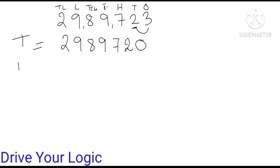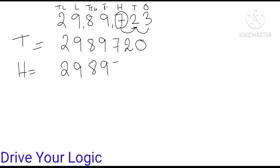Now if I tell you round off to nearest hundred — see, hundreds place — I have to round off this place. The right-most digit to check is 2. Again there will be no change; the 7 will remain 7. So your answer will be 2,989,700, and always remember to put zeros at the end because those places are now rounded.